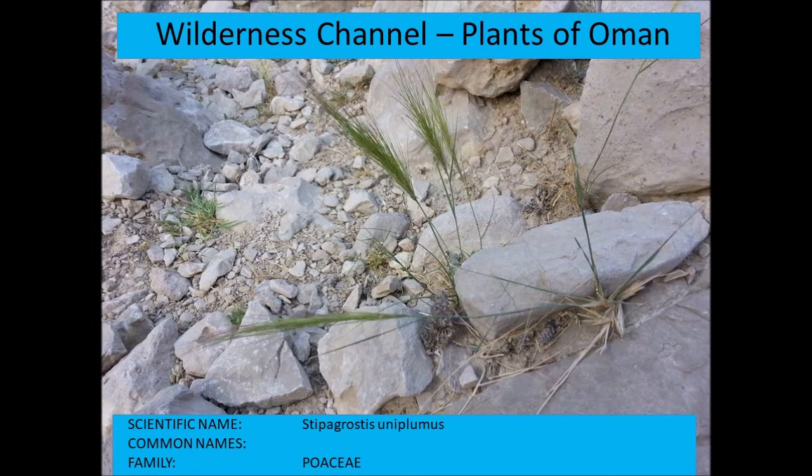Stipagrostis uniplumis is one of the grass species. Stipagrostis plants typically have very fluffy inflorescence heads — characteristic of the genus.